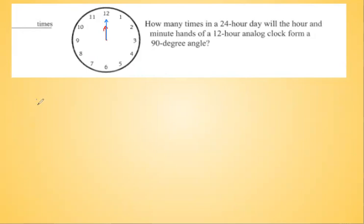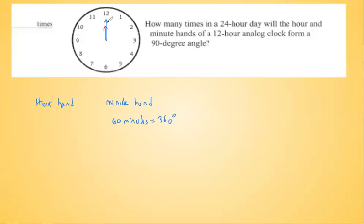So let's label the hour hand and minute hand. When you move the minute hand 360 degrees, that takes 60 minutes. So 60 minutes is going to rotate the minute hand fully — 360 degrees. And when you move 60 minutes for the minute hand, the hour hand moves only from 12 to 1, which is 1/12 of 360, so just 30 degrees.